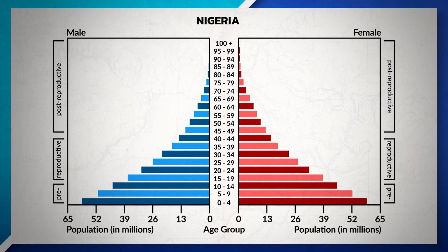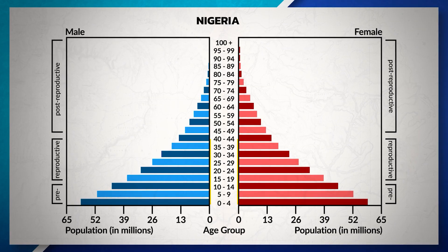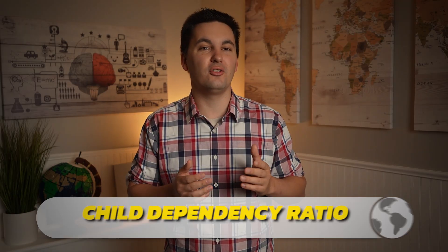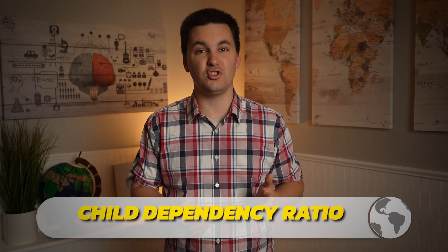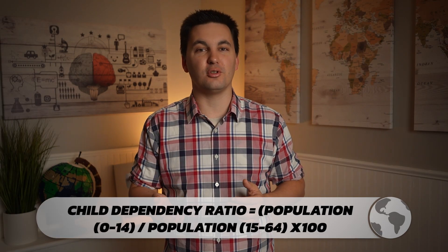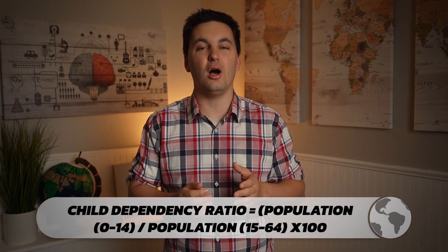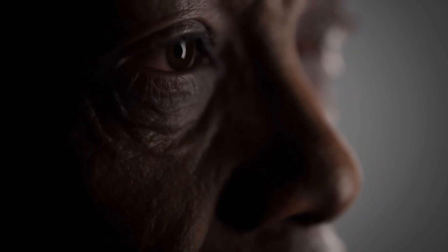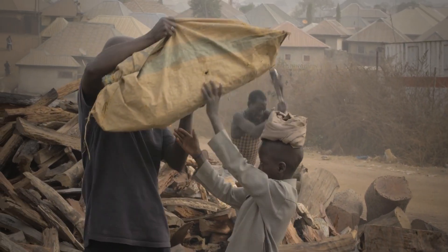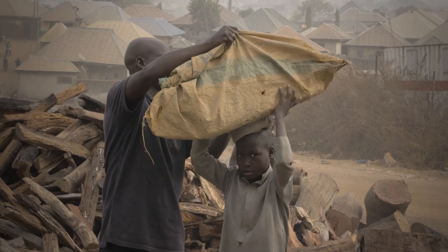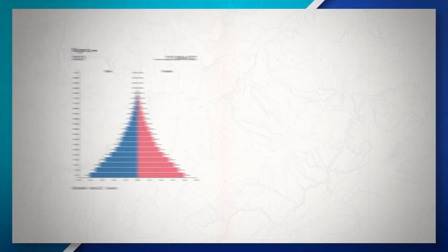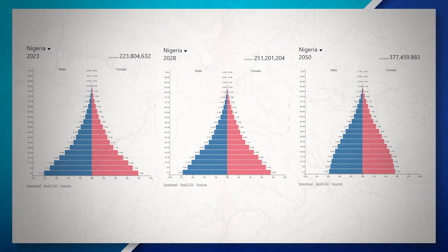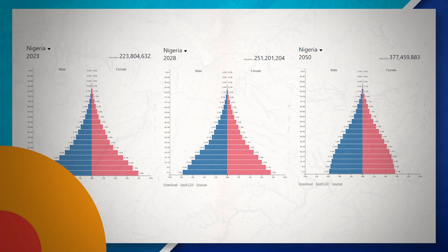For instance, Nigeria has the majority of its population in the reproductive years, indicating a high child dependency ratio. It is a fast-growing country that is most likely in Stage 2 of the demographic transition model. As the population ages, more people will enter their reproductive years and have children of their own, leading to a population boom, likely resulting in a population that will almost certainly double.